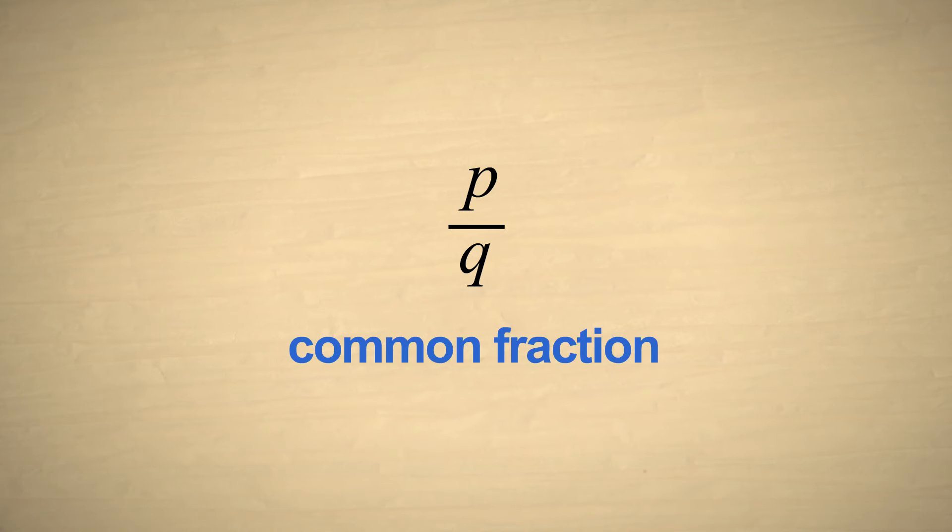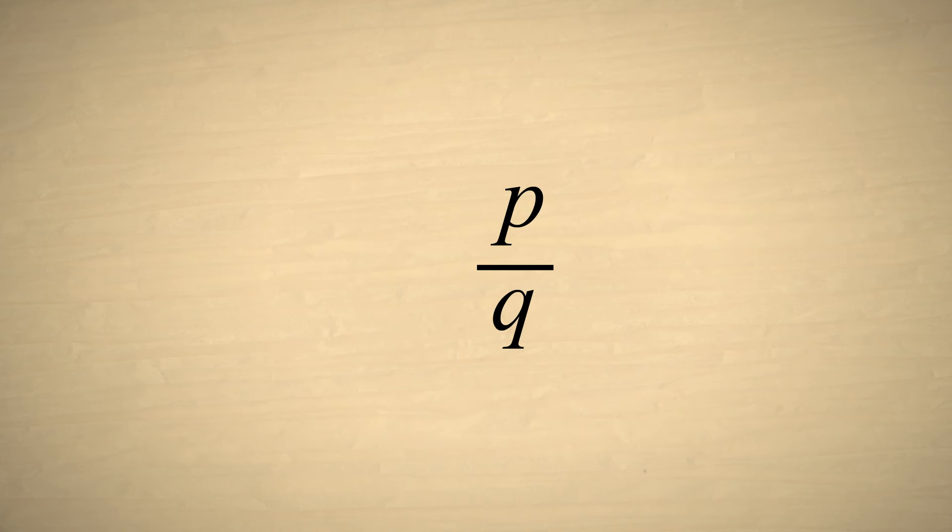The number on the top is called the numerator, and the number on the bottom is the denominator. We can think of a common fraction as being a unit fraction multiplied by the number in the numerator. In other words, a common fraction is simply a multiple of a unit fraction.